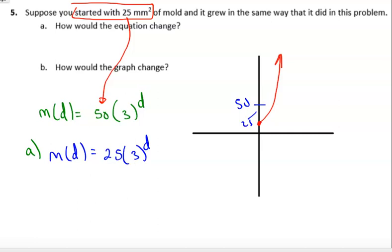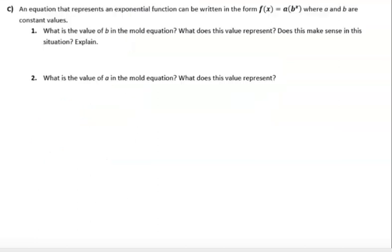All right. So that's part b, numbers one through five. And while we're at it, so we're only at 10 minutes into the video. Let's go a little further. This is part c. All right. So here it says an equation that represents an exponential function can be written in the form of f of x equals a times b to the x power. All right. So perfect, where a and b are constant values. Yes, a is given, b is usually given as well. What is the value of b in the mold equation? So we're referring back to the equation again. And we just said the b value is going to be 3. That's the rate at what it's growing. What does it represent? It is the growth factor.